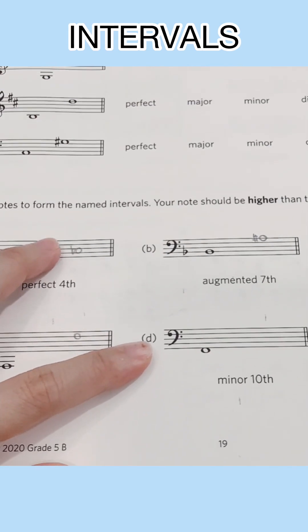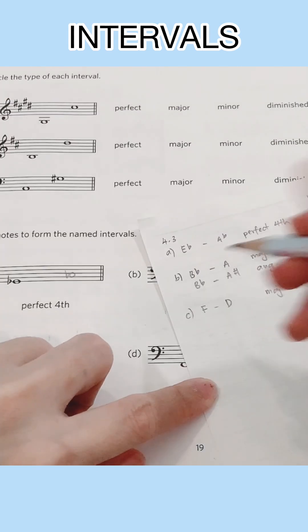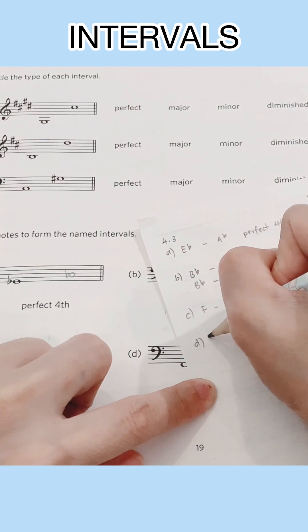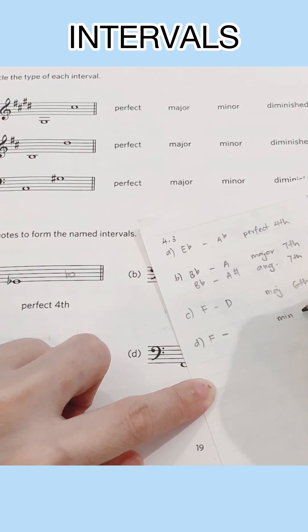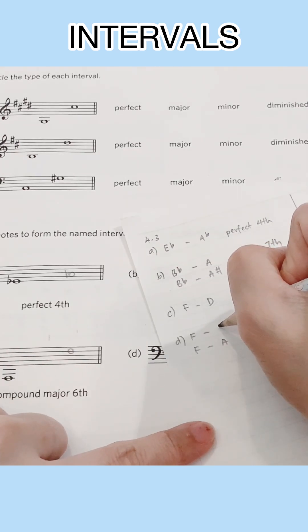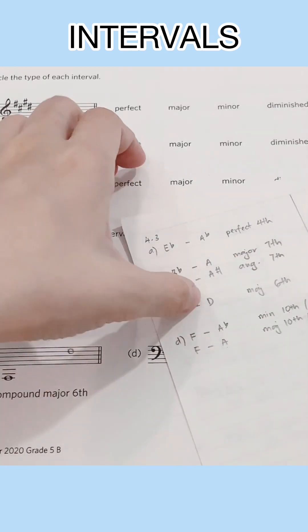And lastly, we have a minor tenth from F. So 10 minus seven is a third. So a third from F major would be A. And that's a major third. So if we are to reduce the step, then A goes down to A flat.